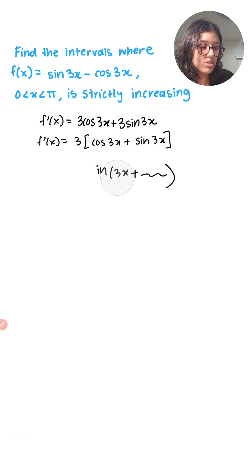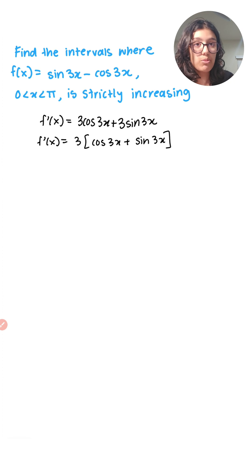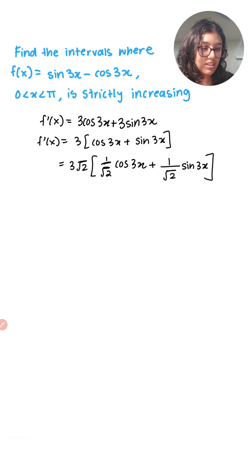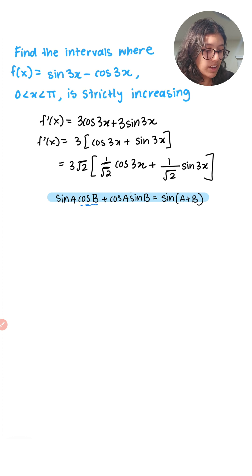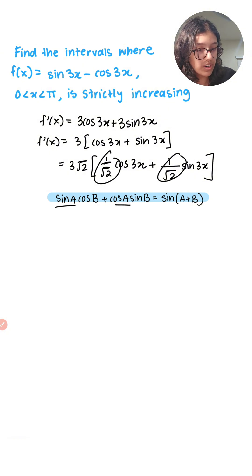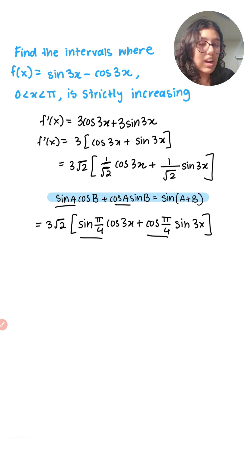That way it's a little bit easier to solve and find the range of x values where it's increasing. So I'm going to multiply and divide by root 2. The reason I did this is that we can apply a trigonometric formula. We have the cosine and the sine covered, and we can rewrite 1 over root 2 as sine(π/4) and cos(π/4).